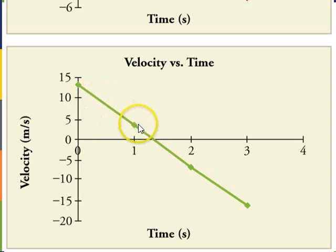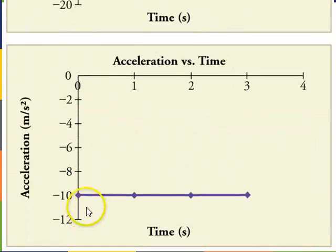And if we take the slope of this graph, velocity versus time, at any point, we just get this constant negative slope, which looks like this. Negative 9.8 meters per second squared at all times.